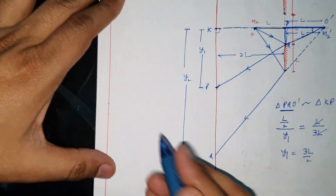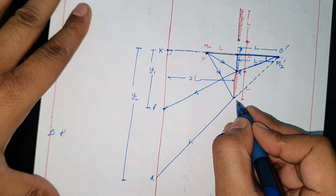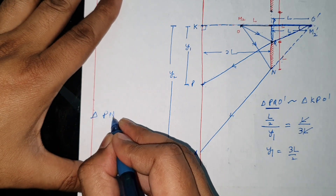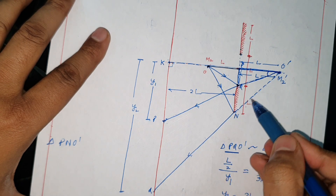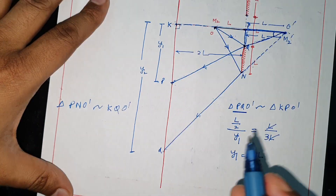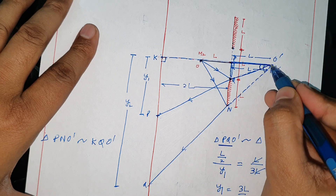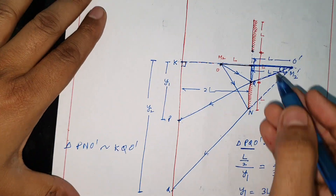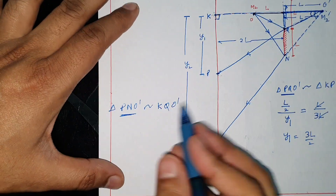So this distance is L·Y2. Similarly, now for triangle PNO and the big triangle KQO — these are also similar triangles. This angle is 90 degrees, and this angle is also 90 degrees, and this angle is common — so two properties are satisfied, making this also a similar triangle.